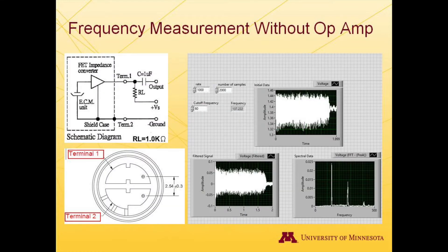To start off with, let's discuss the measurement of sound with an electric condenser microphone. If we consult the specification sheet given by the manufacturer of the microphone, we find that the sheet includes a circuit diagram that can be used to measure sound. We see that the circuit includes a 1uF capacitor attached to terminal 1 on the microphone, and we measure output voltage across this capacitor. We also have a 1 kOhm resistor that is connected between terminal 1 of the microphone and the positive 5V source on the DAC, and then terminal 2 is connected to the ground of the DAC. We can tell the difference between terminal 1 and 2 on the microphone through the three metal pins that are attached to terminal 2 on the underside of the microphone.